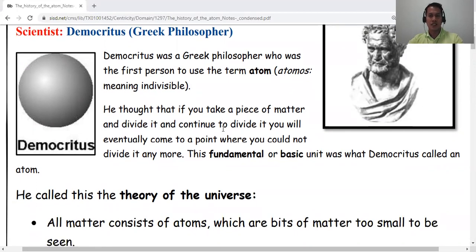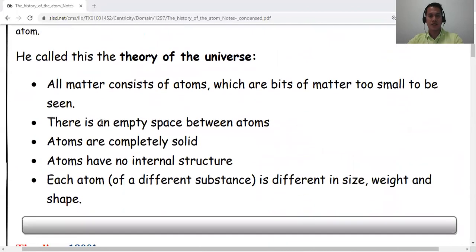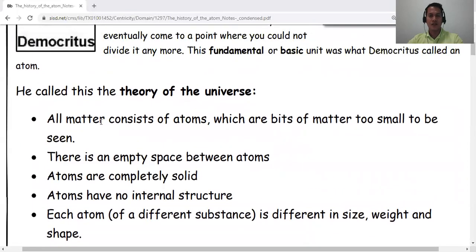According to his idea, if you take a piece of matter and continue to divide it, you will come to a point where you cannot divide it anymore. He called it the fundamental or basic unit. Democritus called it an atom, atomos from the Greek word. It's amazing that they already had this idea way back from BC.